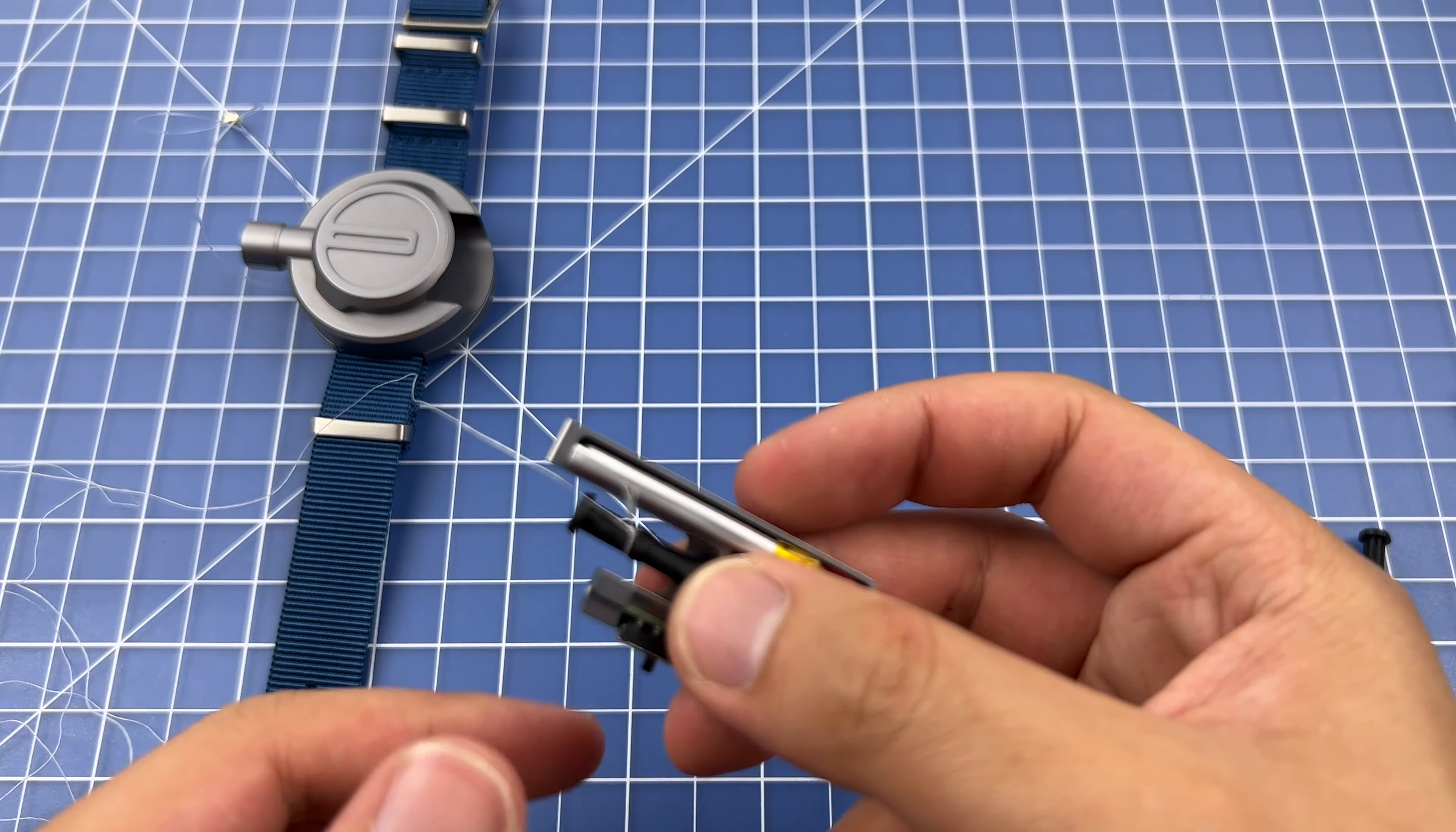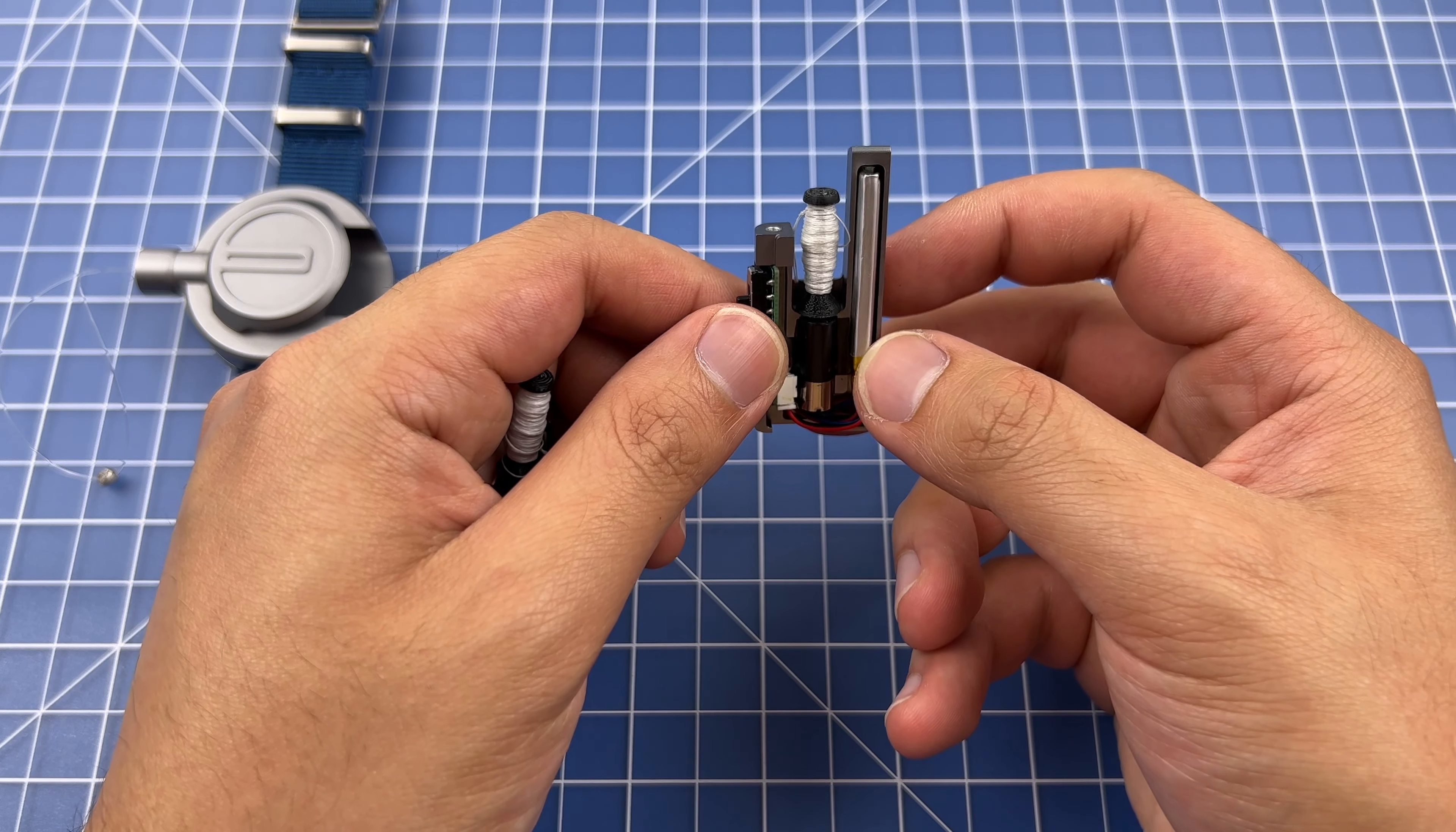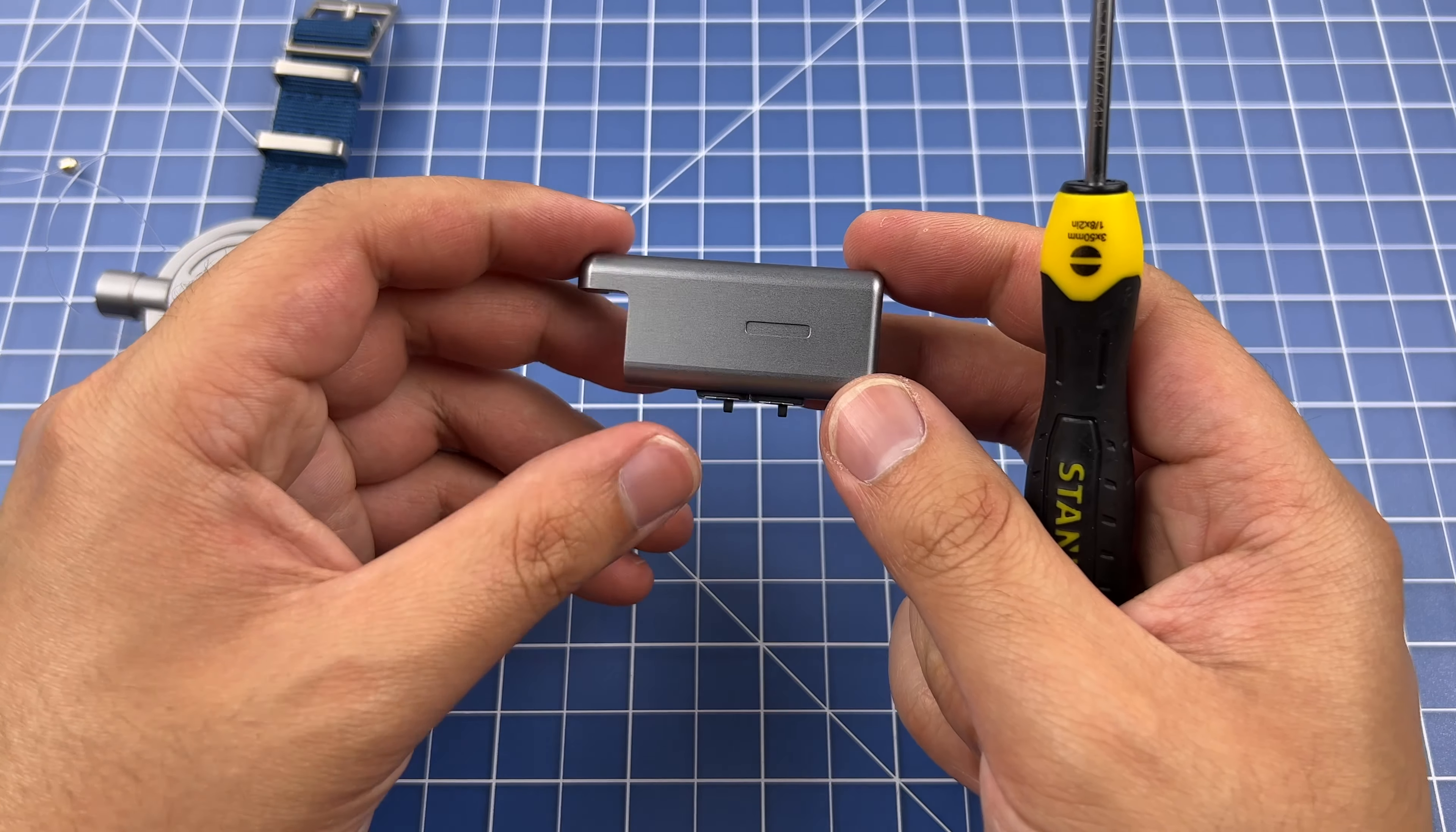Once that's done, you can reinstall the electronic components inside the cartridge and then close it up. If you end up replacing the entire motor and switch assembly, make sure that you reapply the black tape to the motor to ensure it stays in place and doesn't rotate when the spool is rotating. Once that's done, you've fully replaced your thread and your cartridge is good to go again.